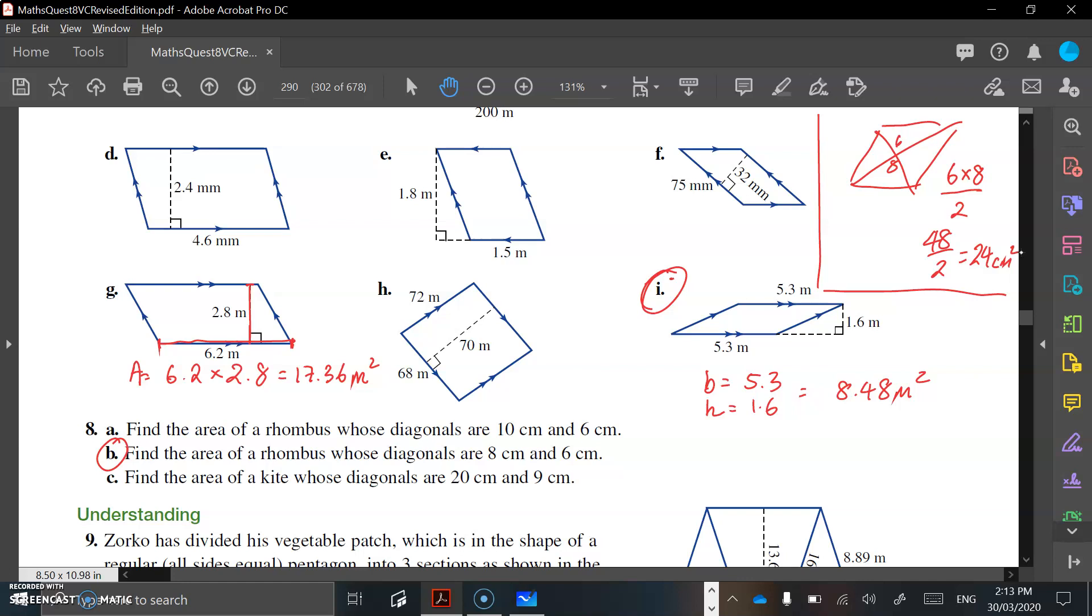Last thing, we've got our area of a kite, same thing, no different to the rhombus. We've got 20 and 9 as our diagonals, so we're going to have 20 times 9, and we're going to halve that. So 20 times 9 is 180. Half of 180 is 90, so 90 centimeters squared is going to be our answer for this kite.